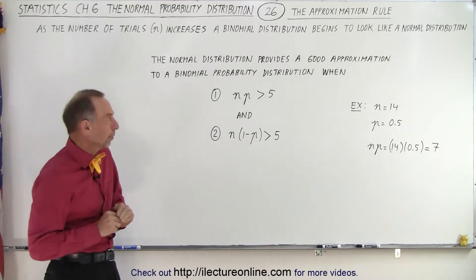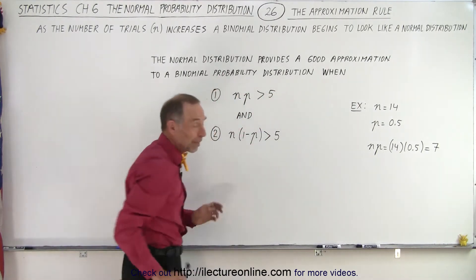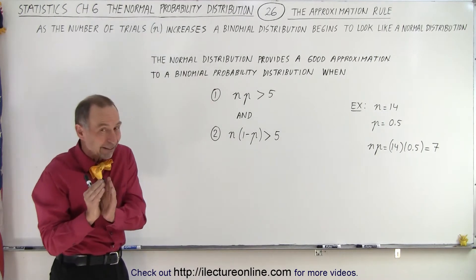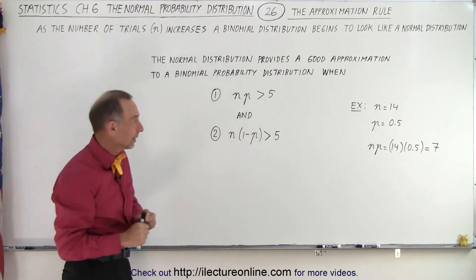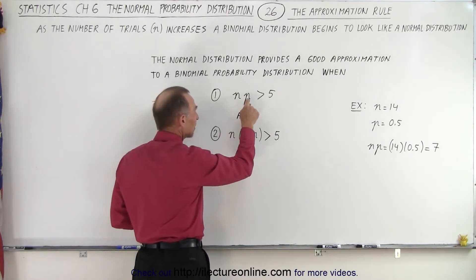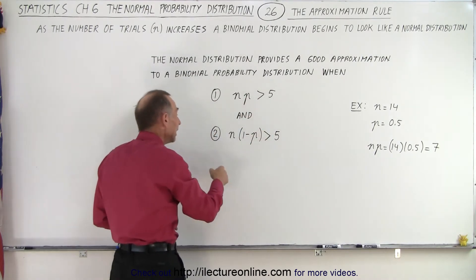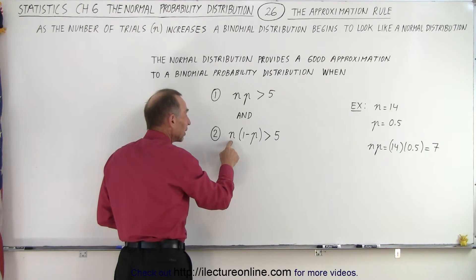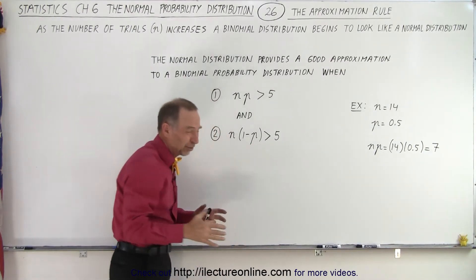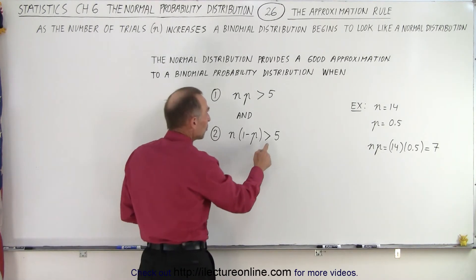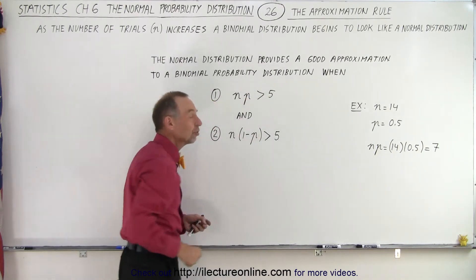There's actually a rule that we can follow. The rule says that the normal distribution provides a good approximation to a binomial probability distribution when the product of the number of trials times the probability of success is greater than or equal to 5, and the number of trials times 1 minus the probability of success, which is essentially the probability of failure, also must be greater than 5. Both of these conditions must be true.